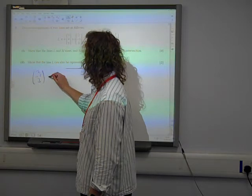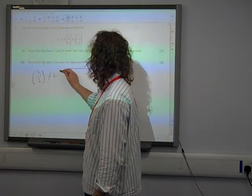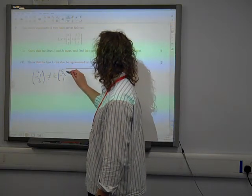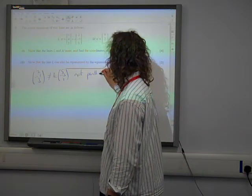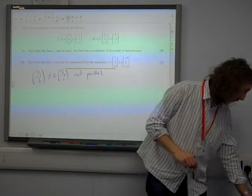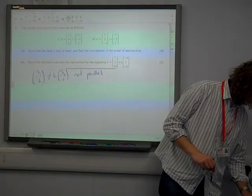2 minus 1, 3 is not equal to some constant times 5 minus 3, 1. So they're not parallel. We don't need to rewrite that bit, I don't think. I don't think we cared about that. But it's quite nice to have written it anyway, isn't it?